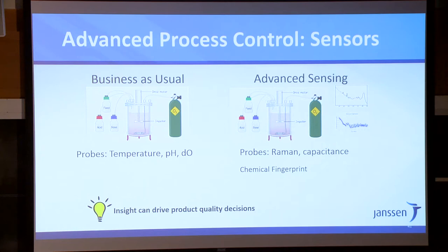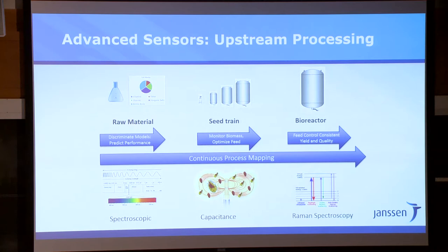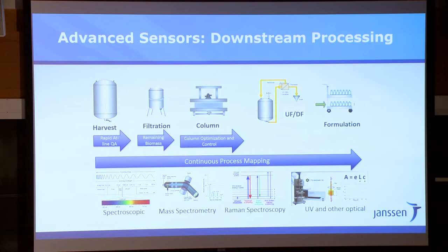Your Raman spectra become part of the multivariate analysis, giving you all this insight into the quality attributes and the yield you can expect. You can probe your raw materials, your seed train, your actual bioreactor using different spectroscopic approaches — capacitance in the seed train and so on. Going still further down the road: spectroscopic techniques for the harvest and filtration, mass spec for multi-attributes. A lot more Raman and UV for protein concentration — you can put all that together and start optimizing the performance across the whole line.